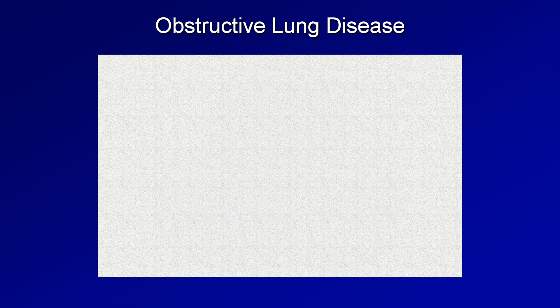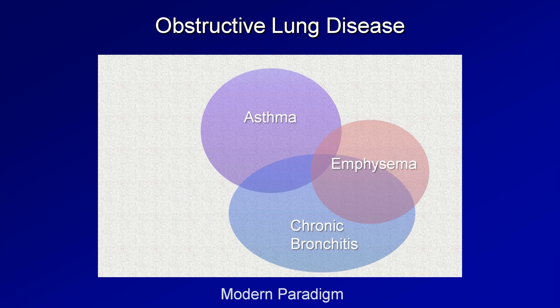A more modern paradigm might look something like this. We still have asthma, chronic bronchitis, and emphysema, but the degrees of overlap are not equal. There are many more people with both chronic bronchitis and emphysema than either one of those with asthma.